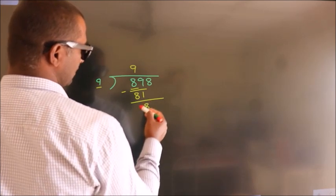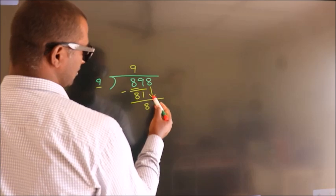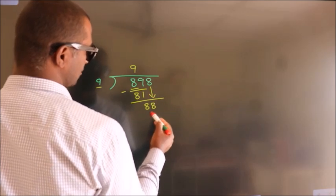After this, bring down the next number. So 8 down, so 88.